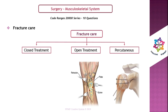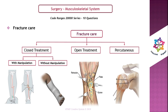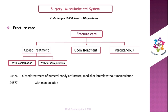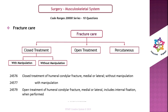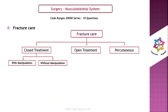Fracture care is classified into three types: closed treatment, open treatment, and percutaneous treatment. Closed treatment is further classified into two subtypes: with manipulation and without manipulation. The alternative term for manipulation is reduction. These are the code series for closed, open, and percutaneous treatment for femoral condylar fracture, and the same pattern is followed for other fractures.